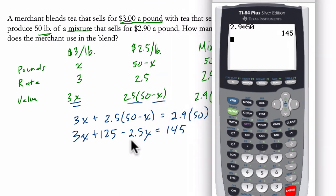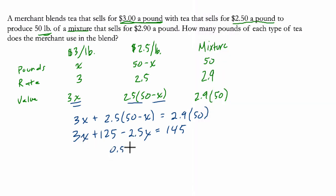So now we're just going to solve for X. 3X minus 2.5X is 0.5X, and then 145 minus 125 is just 20. We divide by a half. How many halves fit into 20? Well, that's 2 halves per whole. It's 40.